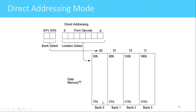After bank 0, the next bank is bank 1, then bank 2 and then bank 3. To select any location in an individual bank, we need 7 bits. That 7-bit address decides a unique location in every bank. Which bank that location will be accessed from is decided by RP1 and RP0. Combining this, we have 7 plus 2, that is a 9-bit address, which decides which location will be accessed from the RAM memory.